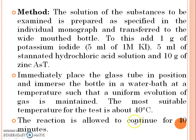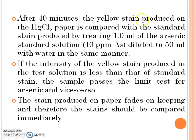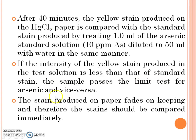The reaction is allowed to continue for 40 minutes. After 40 minutes, the yellow stain produced on the mercury chloride paper is compared with the standard stain produced by treating 1 ml of the arsenic standard solution diluted to 50 ml of water in the same manner. If the intensity of the yellow stain produced in the test solution is less than that of the standard stain, the sample passes the limit test for arsenic, and vice versa. The stain produced on paper fades on keeping, and therefore the stain should be compared immediately.